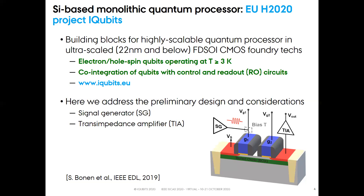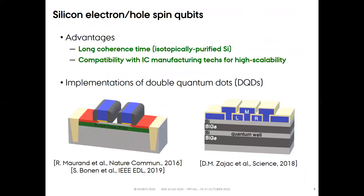Before discussing the designs, I'm going to give a very quick overview of electron hole spin qubits and the main spin manipulation and readout techniques. Quantum algorithms require the preparation of a qubit in superposition states. However, these states tend to decay with time due to unwanted interaction of the qubit with the environment. This process is known as decoherence, and one of the main advantages of silicon electron hole spin qubits are the long coherence times, which can also be improved by isotopic purification of silicon. Another main advantage is the compatibility with the manufacturing technology for integrated circuits, and thereby the potential for high scalability.